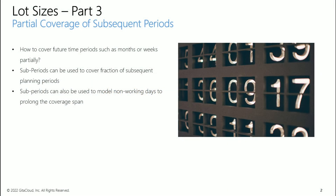Planners may need to provide forward cover for partial values of future periods — for example, a coverage span of 2.5 weeks instead of 2 weeks. Planners can define subperiods in IBP to support such fractional values of coverage span.